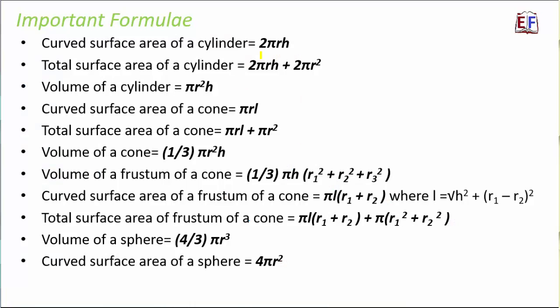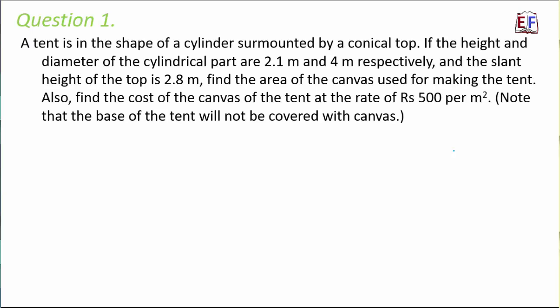A few important formulae that should be at your fingertips are: curved surface area of a cylinder, total surface area of a cylinder, volume of a cylinder, curved surface area, total surface area and volume of a cone, volume of a frustum, curved surface area and total surface area of a frustum of a cone, volume and curved surface area of a sphere and hemisphere. Always expect questions involving a combination of two shapes — for example, a cylinder and a cone, or a cone and a hemisphere.